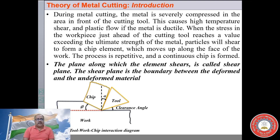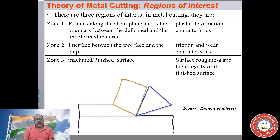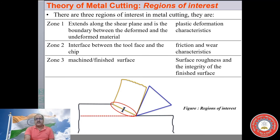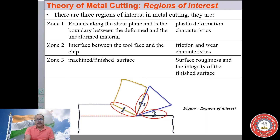The plane along which the material shears is called the shear plane — essentially the boundary between deformed and undeformed material. While studying metal cutting, there are three zones of importance. Zone 1 extends along the shear plane, the boundary between deformed and undeformed material, which helps us understand the plastic deformation characteristics of the material. Zone 2 is the interface between the tool and the chip, which helps us understand friction and wear characteristics. Zone 3 is the machined surface, which we study to understand surface roughness and surface integrity.